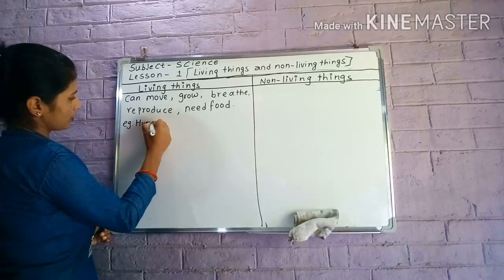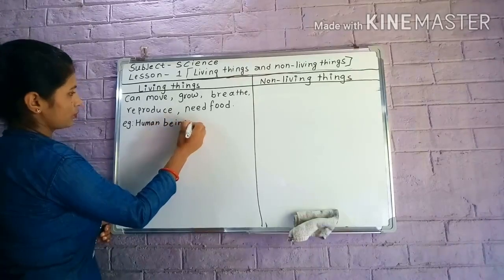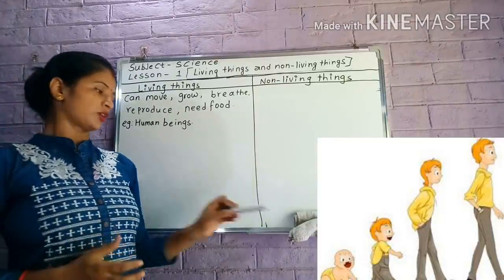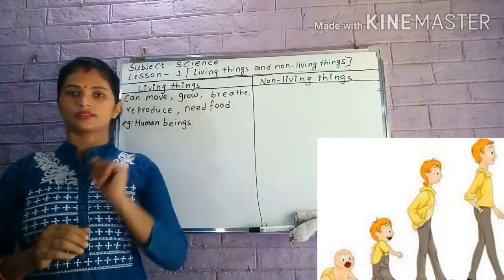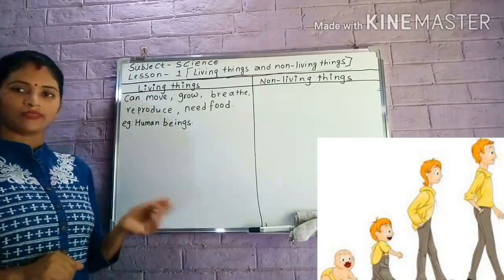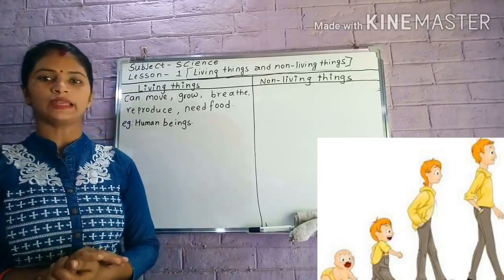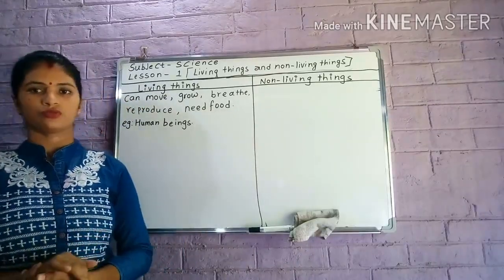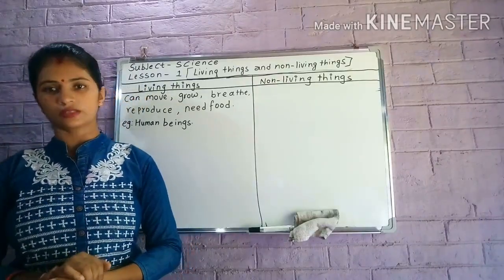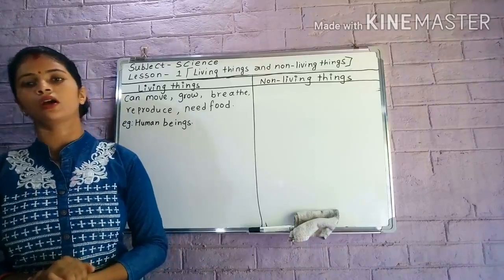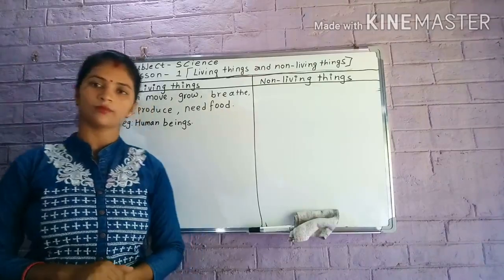Human beings — H-U-M-A-N B-E-I-N-G-S — human beings. Student, human beings means you and me, like us. Because we move here and there on our own. We need food to live. We need breath also, and we reproduce. Reproduction is also a system which is going on in human beings, animals, and birds.